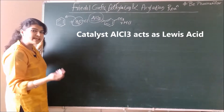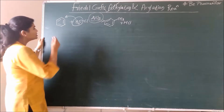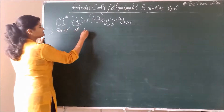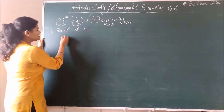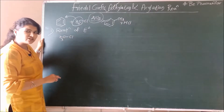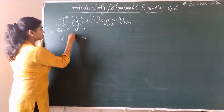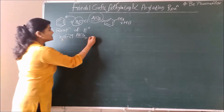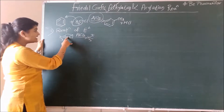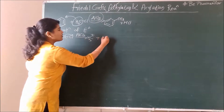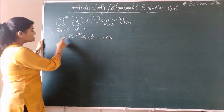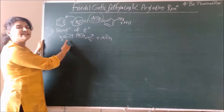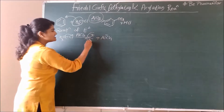Looking at the mechanism, it involves three major steps. The first step is formation of an electrophile. Our reagent CH3Cl undergoes heterolytic fission to give CH3+ ion, and the electrons move towards AlCl3 to form AlCl4-. So the alkyl halide reacts with aluminium chloride and undergoes heterolytic fission to give an electrophile — the carbonium ion.